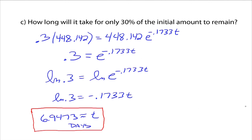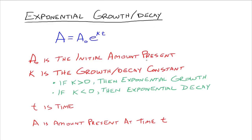That's the idea on exponential growth and decay. Whenever something is growing or decaying exponentially, the plan of attack is to use this formula. Sometimes you have to figure out the growth-decay constant first using the given information, and then you can go answer the problem originally asked. Study well — please let me know if you have any questions.